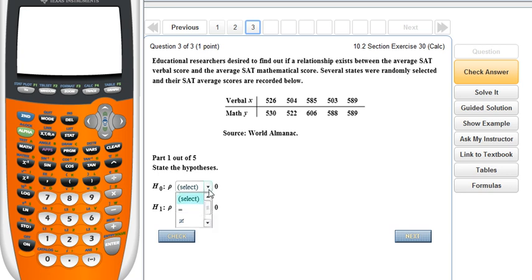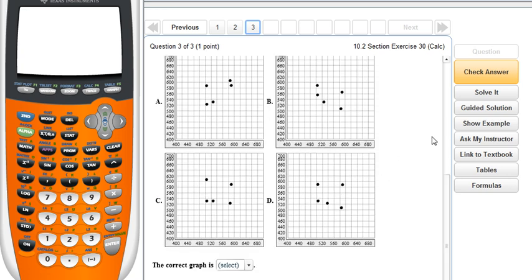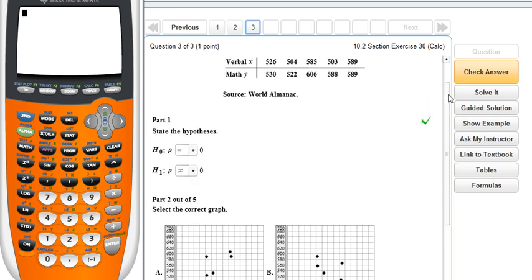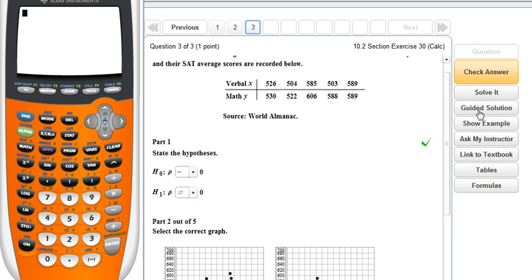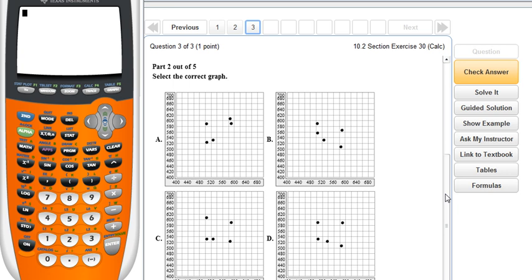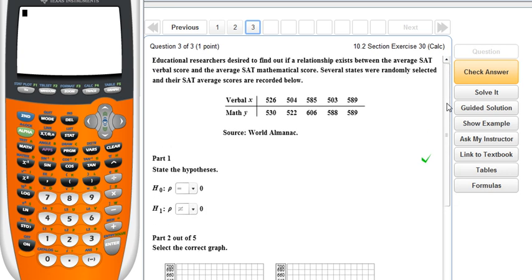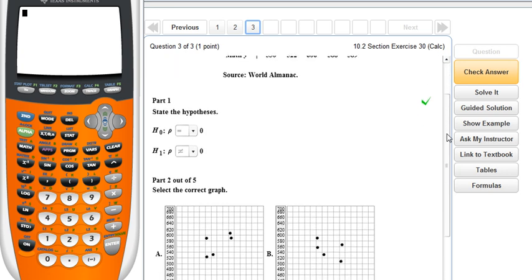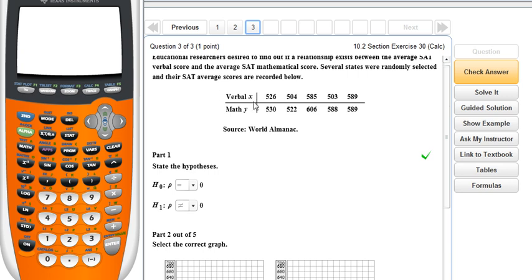So remember null hypothesis, always equal to zero. Alternative, always not equal to zero. All right, our scatter plot. Well, you know, we could just take these order pairs right here and just come down and look at the graphs and find the one that we want. But I'd like to show you on the calculator how to do this if you haven't already learned. So let's go ahead and put our data into our calculator.